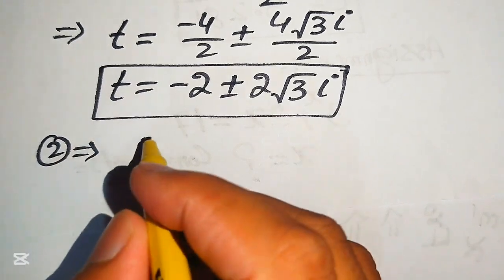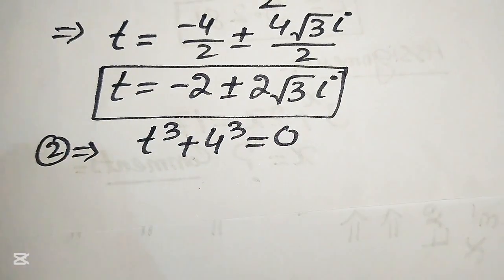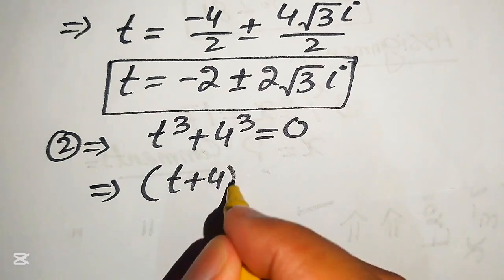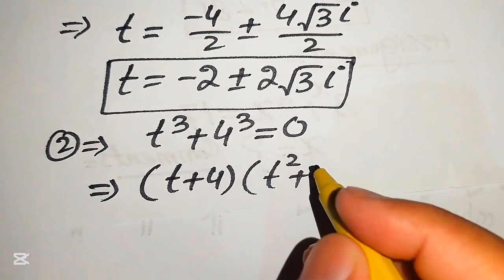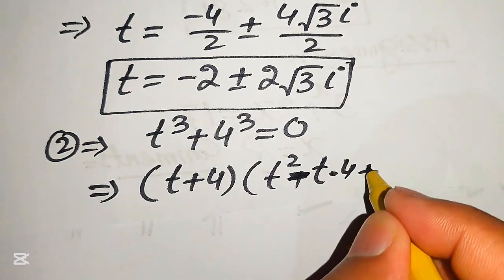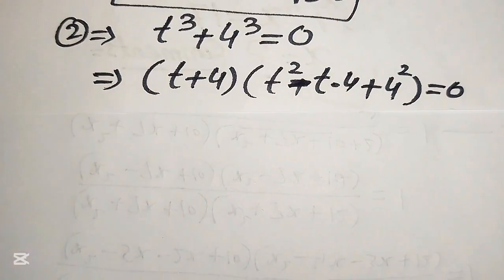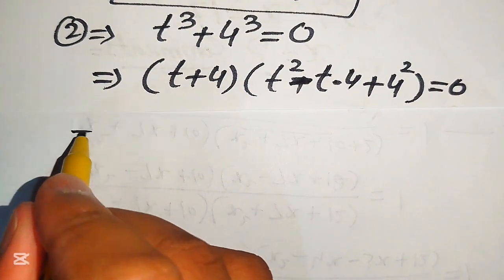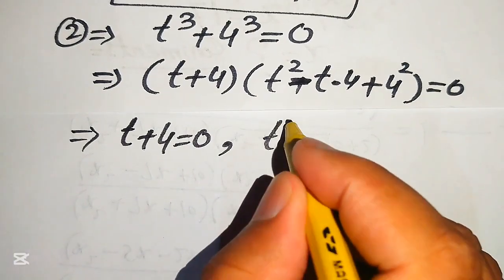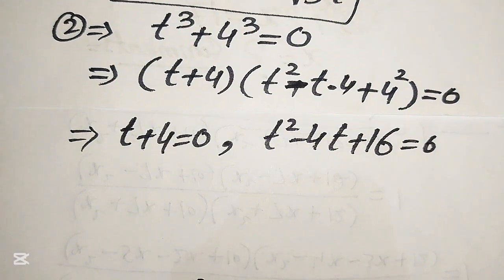Equation number 2 is t³ + 4³ equals 0. Applying the sum-of-cubes formula, it is written as (t + 4)(t² − 4t + 16) equals 0. We divide this into two cases: t + 4 equals 0, and t² − 4t + 16 equals 0.